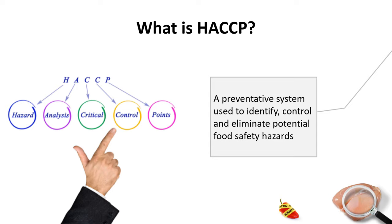It is a systematic preventive approach to food safety from biological, chemical, and physical hazards in production processes, from raw material production, procurement, and handling, to manufacturing, distribution, and consumption of the finished product.